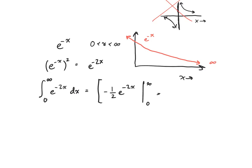So now I plug in those boundaries, negative one half e to the negative 2 times infinity. This whole expression is actually going to go away, e to the negative infinity is zero. And then I subtract negative one half e to the negative 2 times zero for the other boundary.